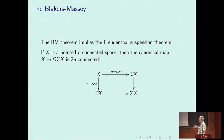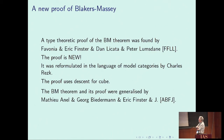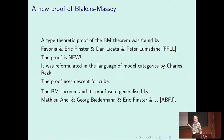A type-theoretic proof of the Blakers-Massey theorem was found during the Univalent Foundations program in 2012–13 by Favonia, Finster, Licata, and Lumsdaine — it is a totally new proof. It was reformulated in the language of model categories by Charles Rezk. The proof uses descent, specifically univalence and descent for cubes. It was later generalized by Anel, Biedermann, Finster, and myself.